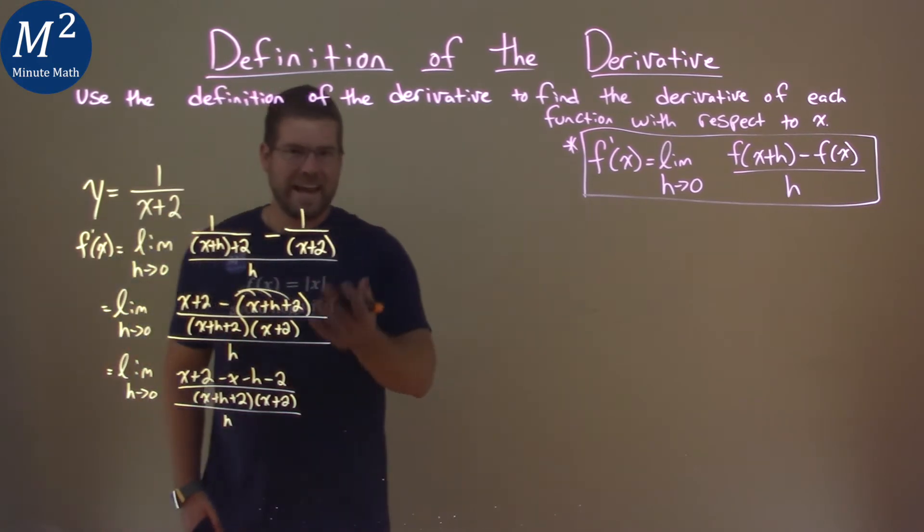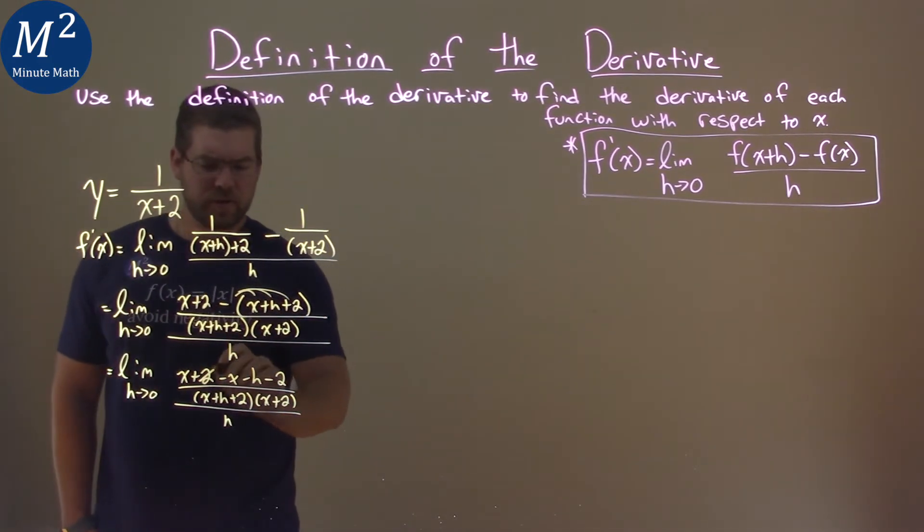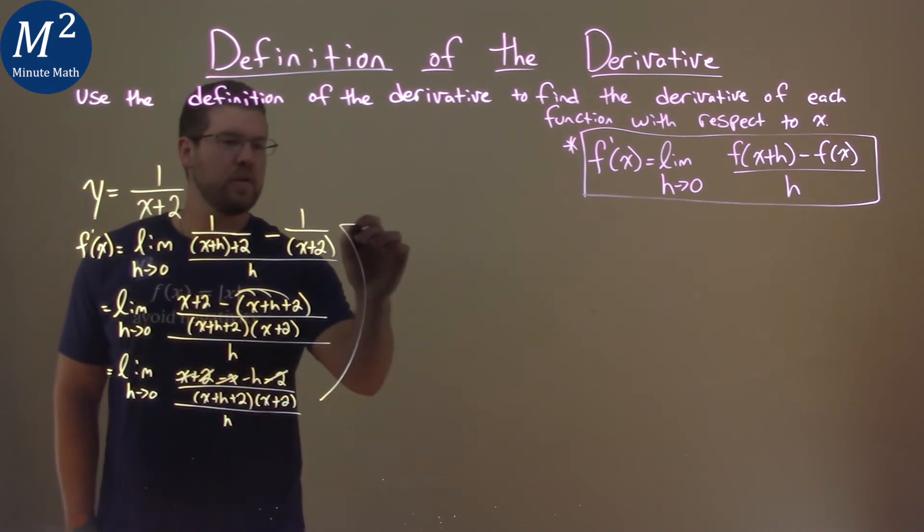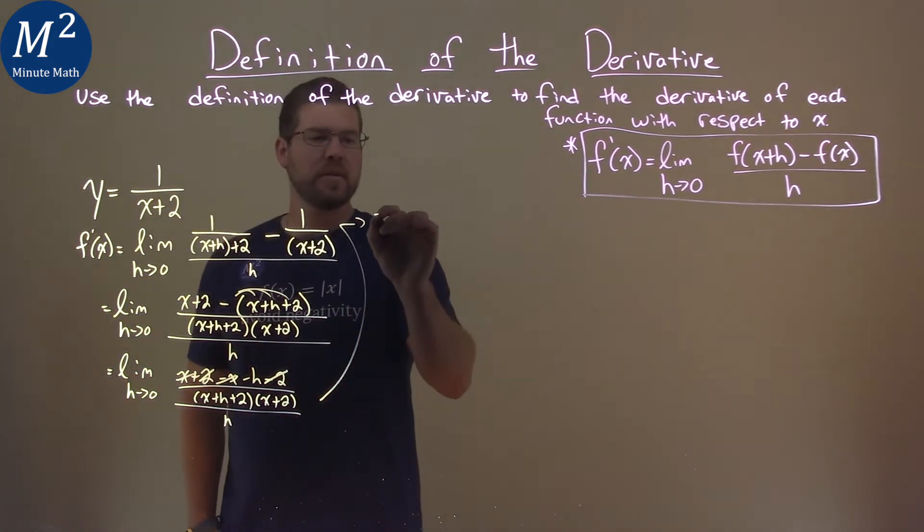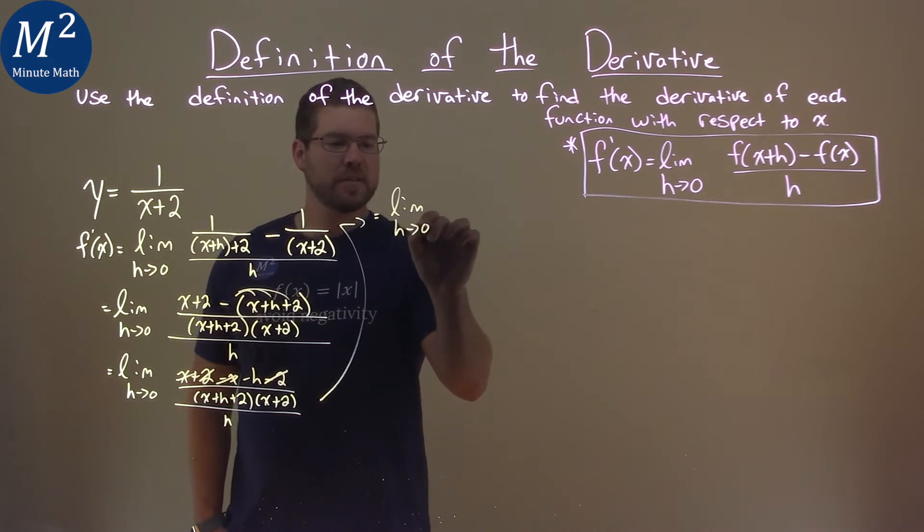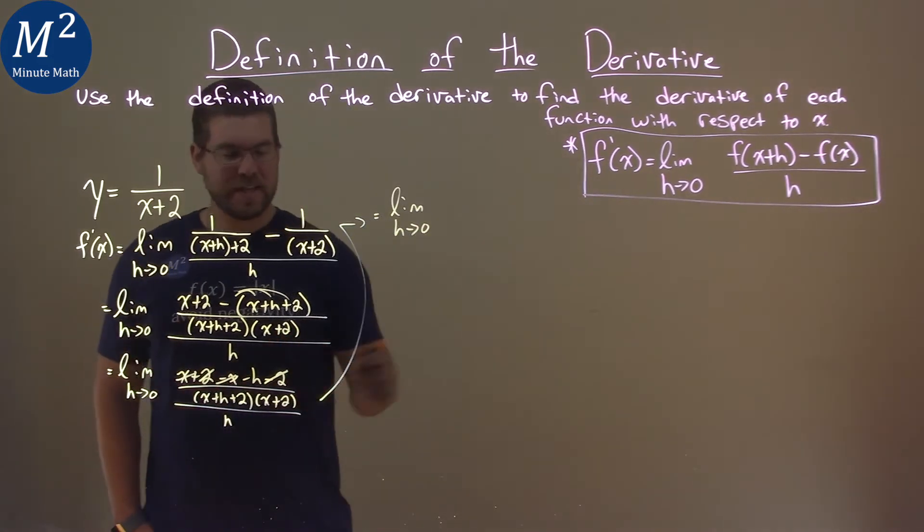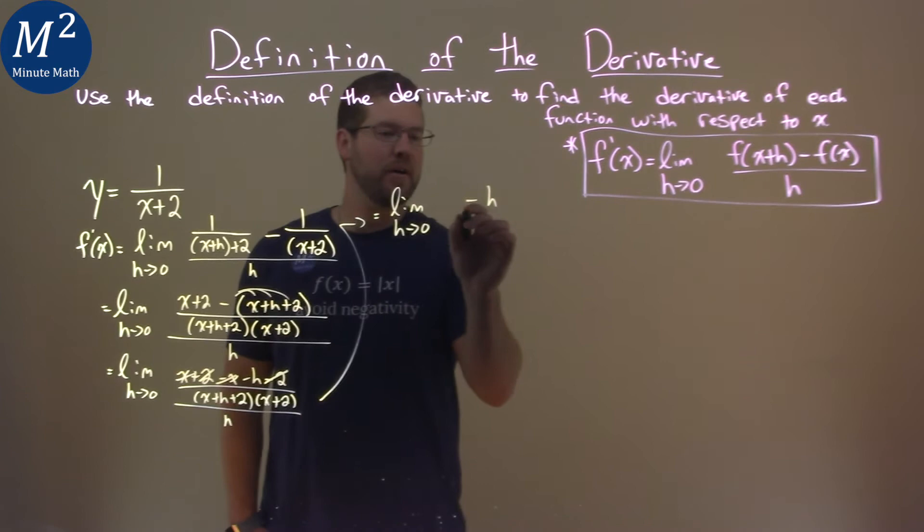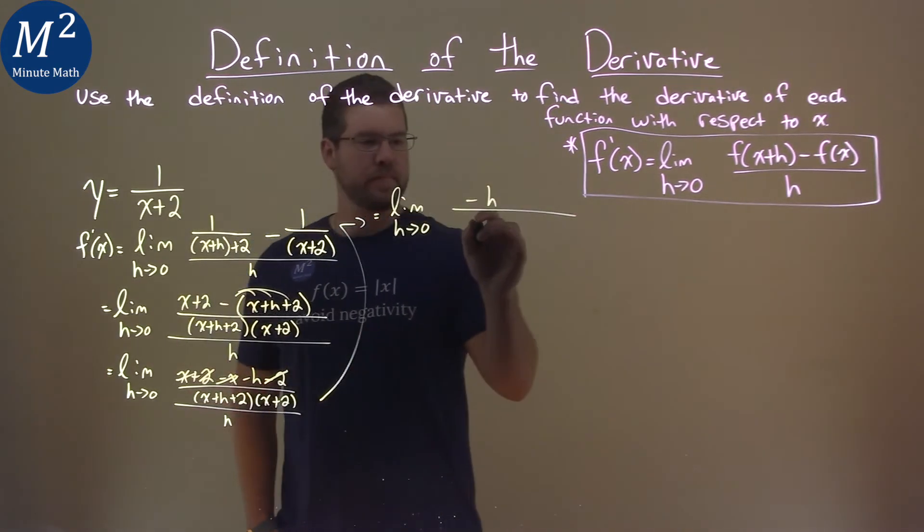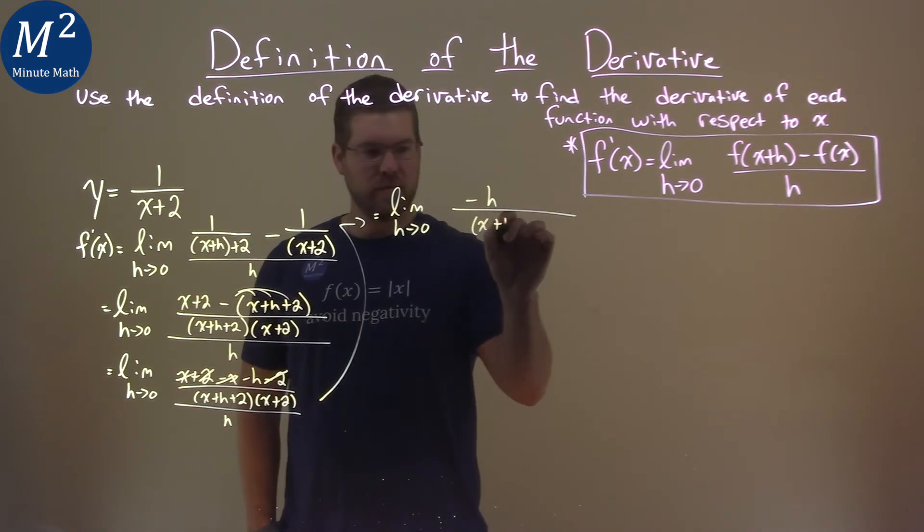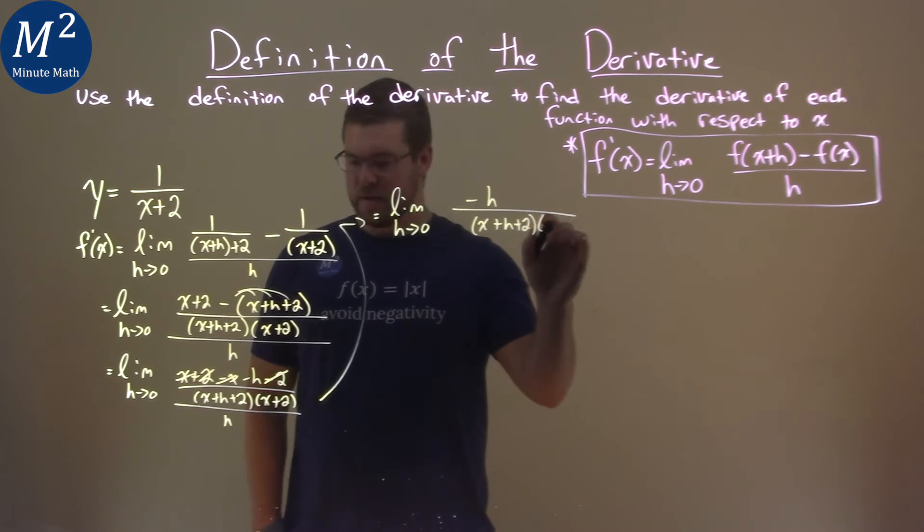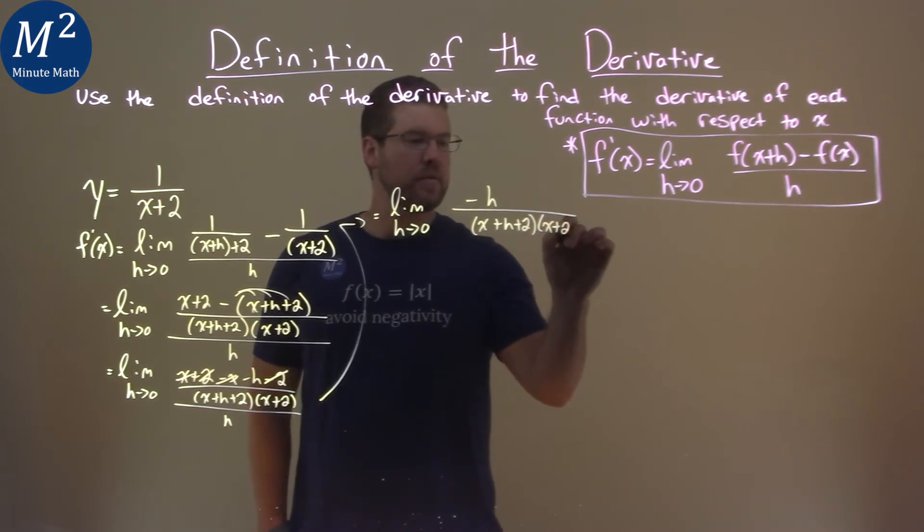Now here's where the beauty happens. We can cross off the 2's right here, they cancel, and we cross off the x's. So what does that leave us? It leaves us with the limit as h approaches 0 of just a negative h value over x plus h plus 2 times x plus 2.